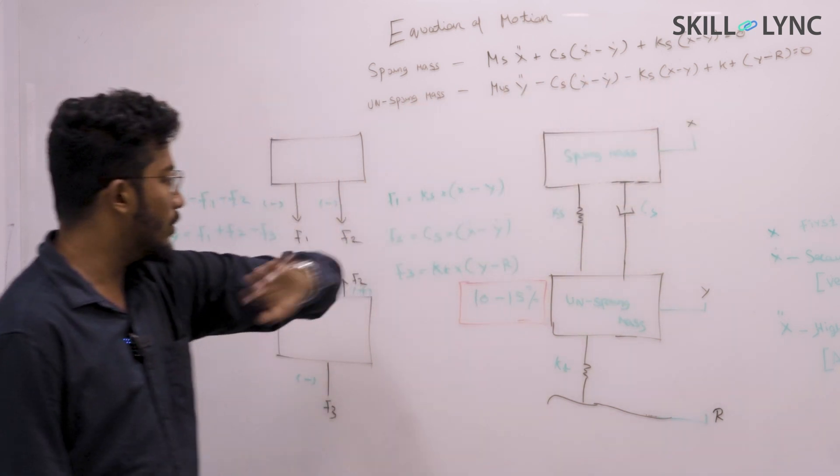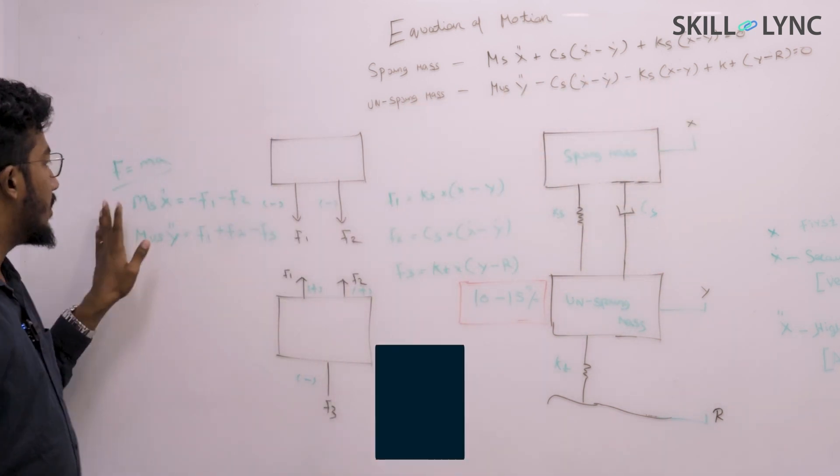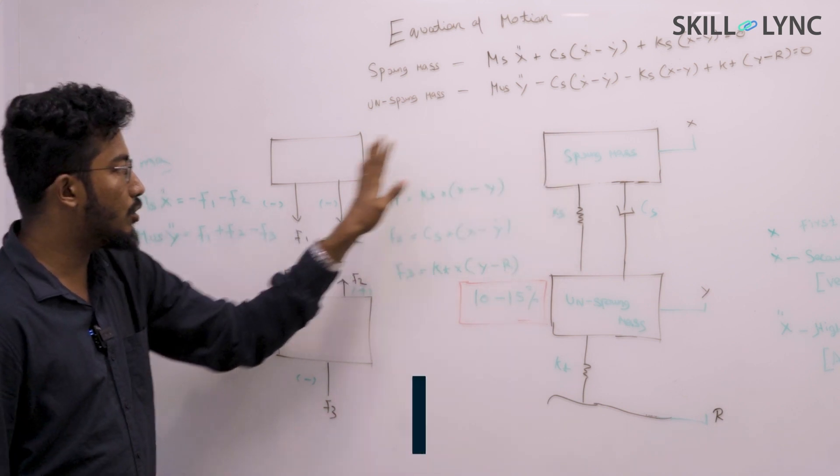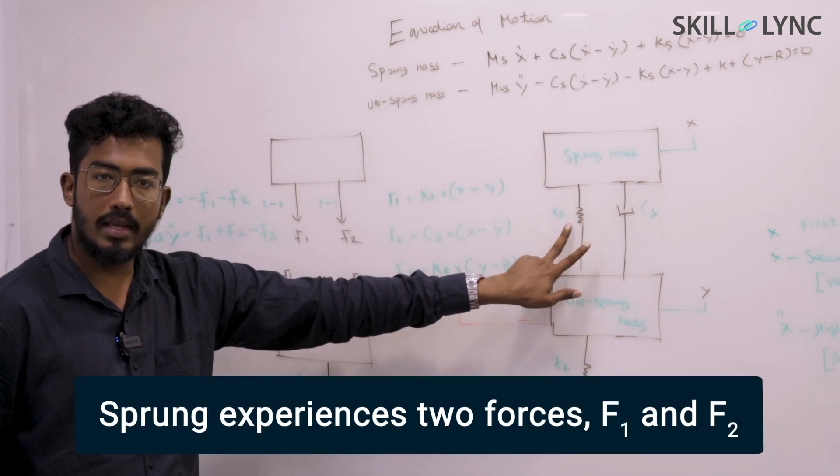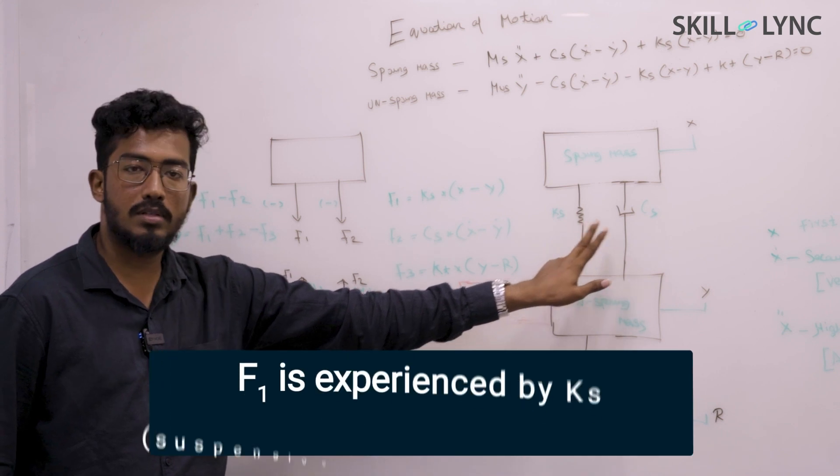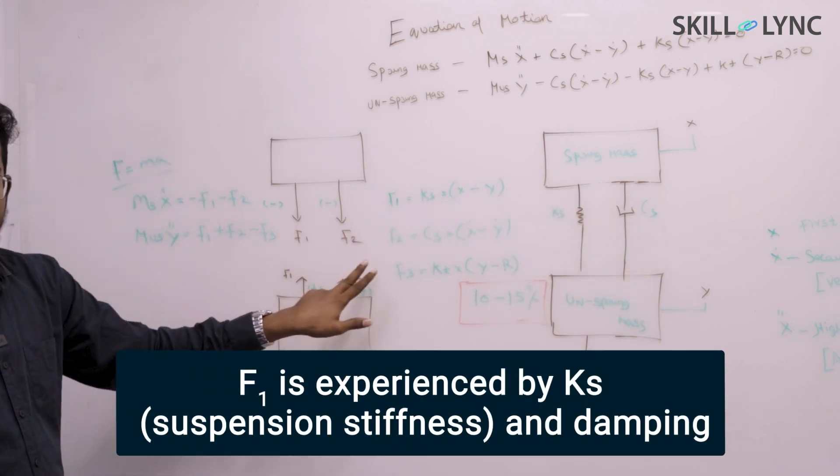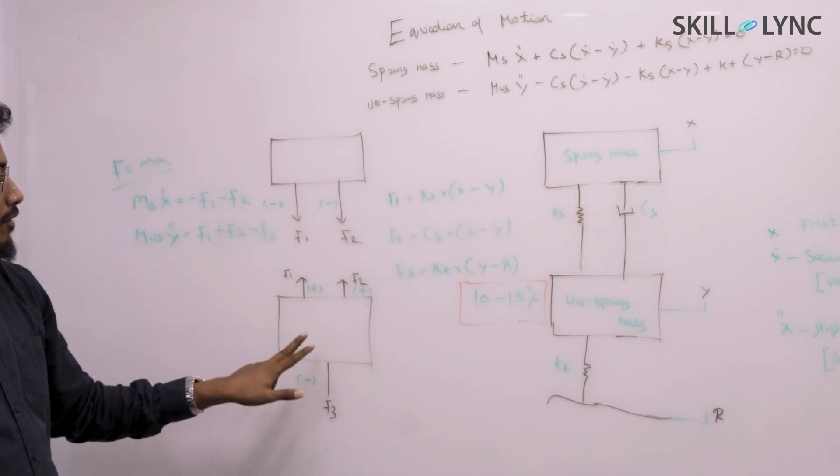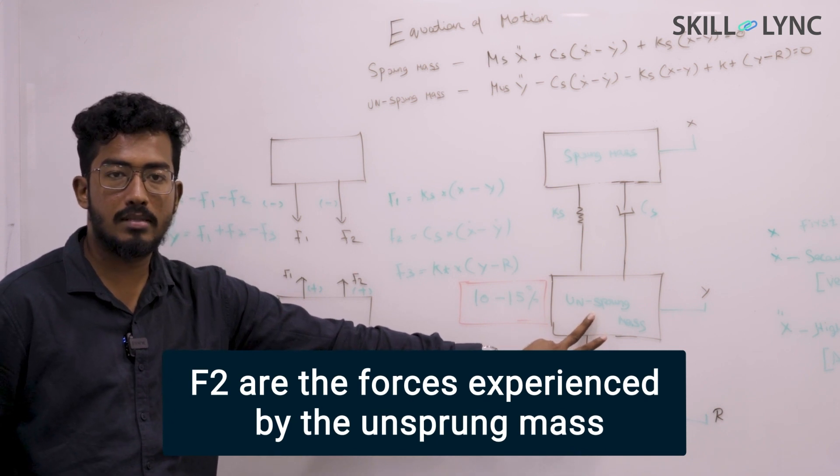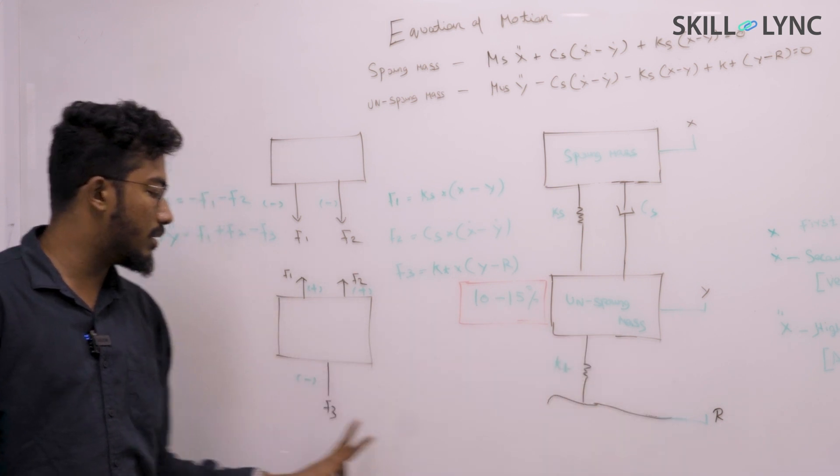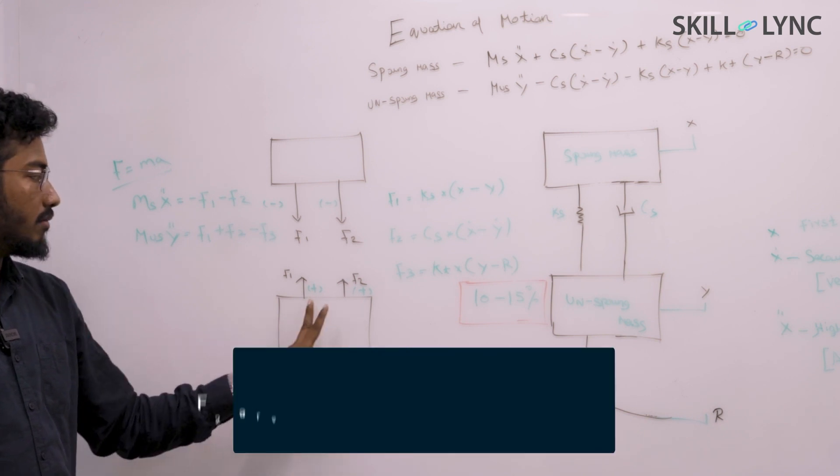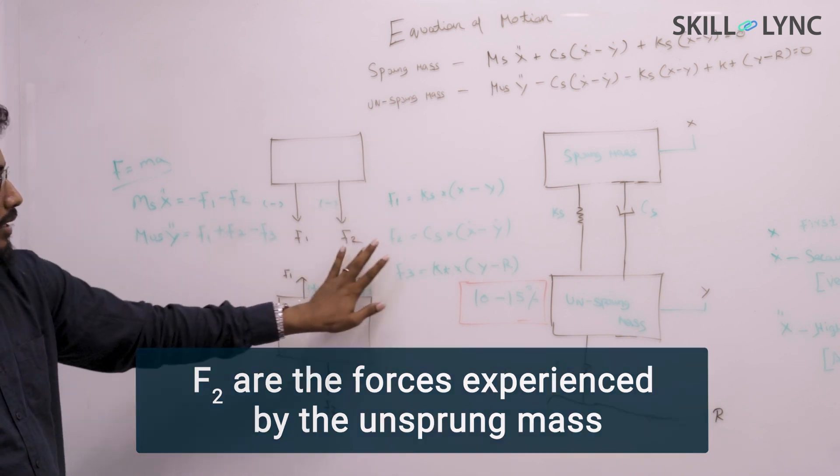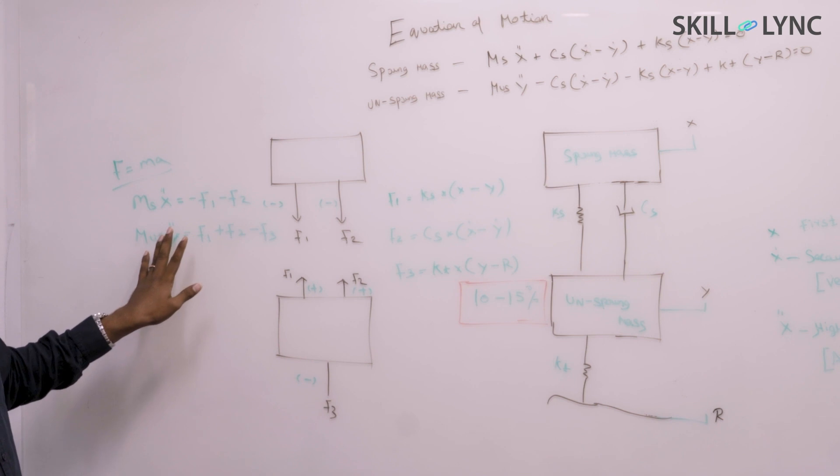Look at the overall equation. Before that, I'll tell you how we came here - by good old law of F equals ma. As you can see here, I've categorized your sprung mass into two forces. Your force one is experiencing by your Ks, your suspension stiffness and damping - that's your F1 and F2. Since they are opposite in nature, that's a negative sign. And force two experiences forces on the unsprung mass.